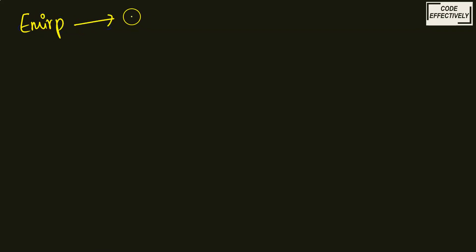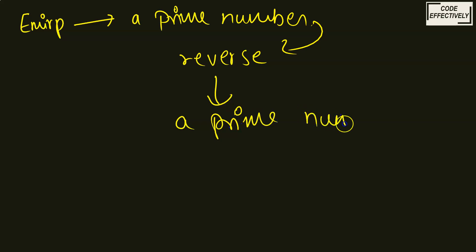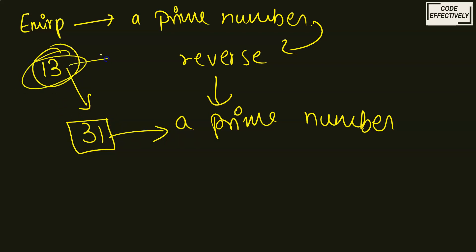What is an EMERP number? An EMERP number is a prime number, and whenever we reverse that number, if the reverse of that number is also a prime number, then we say that the given number is an EMERP number. For example, let's take 13. We know 13 is a prime number. When we reverse 13, it comes out to be 31, and 31 is also a prime number. So we can say that the given number 13 is an EMERP number.